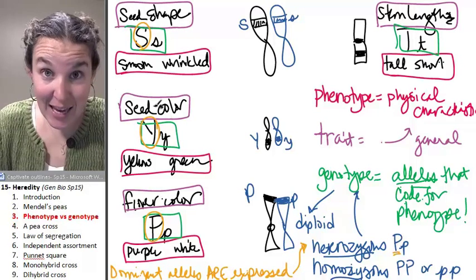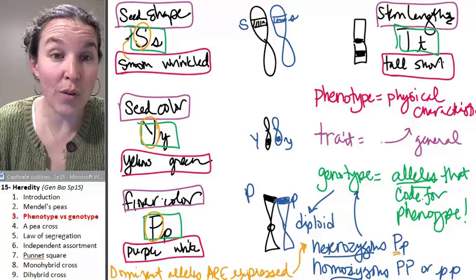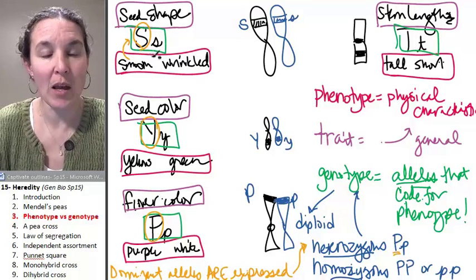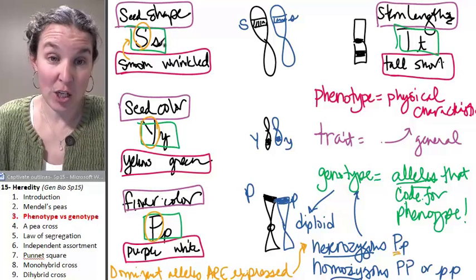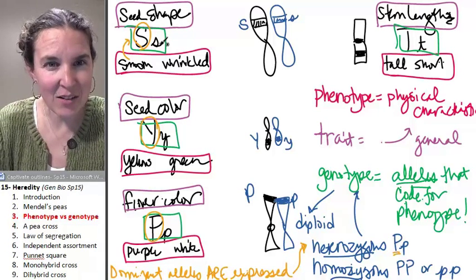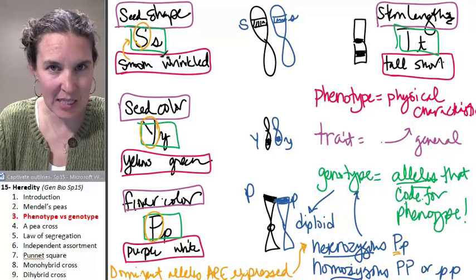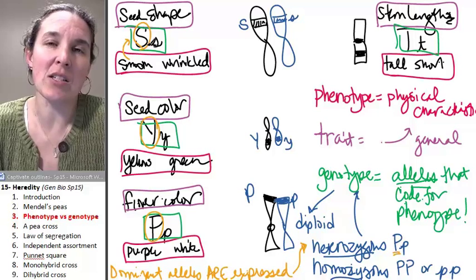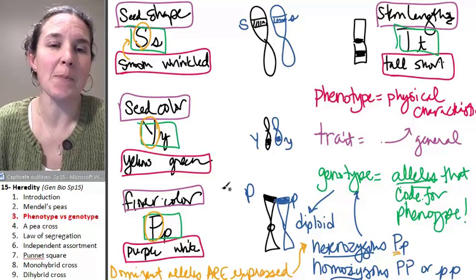And in this case, the smooth seed shape is dominant over the wrinkled seed shape. This little genotype has a recessive wrinkled seed allele, but it's not expressed because the dominant allele is expressed.